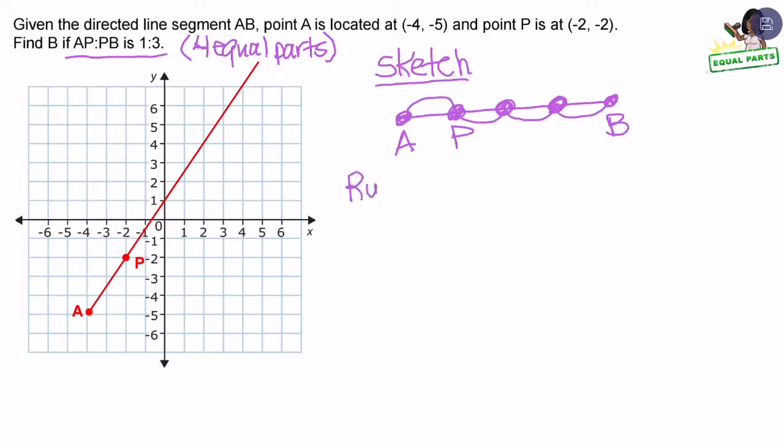First question, what is going to be the rule from point A to point P? I'm going to find that out by going to my graph. Starting at point A, I know I have to go up three units and then I have to go to the right two units in order to get to P. So my rule is going to be X plus 2 and then Y plus 3.